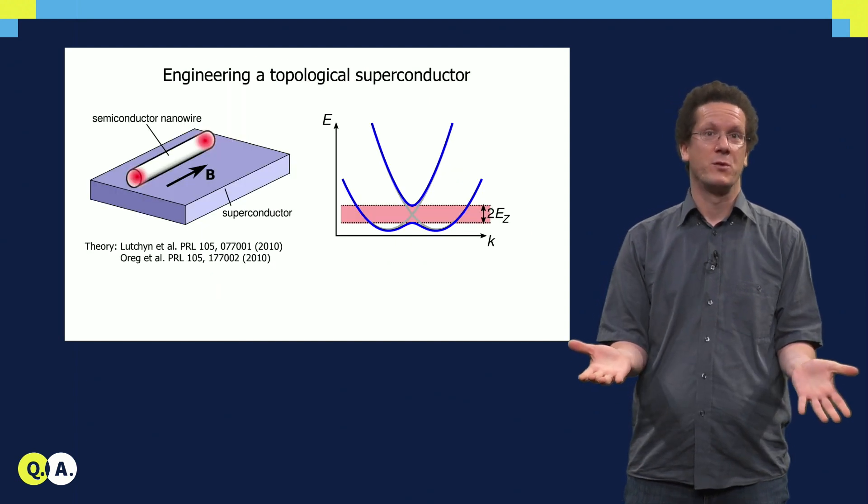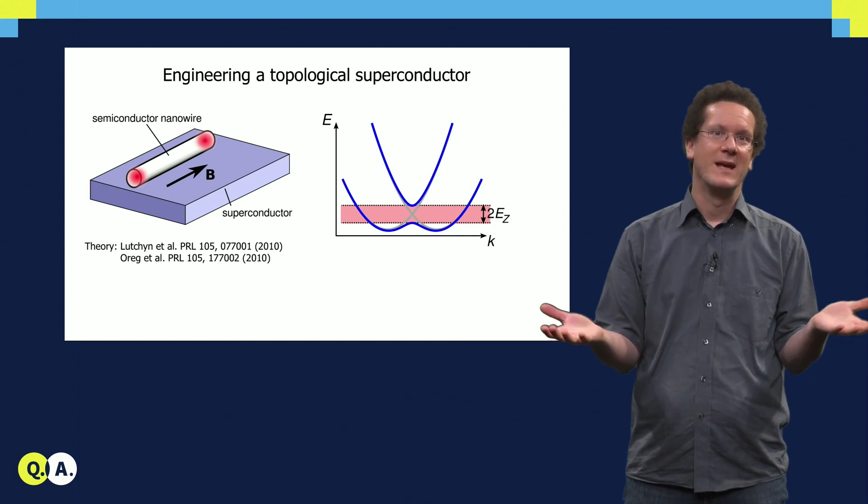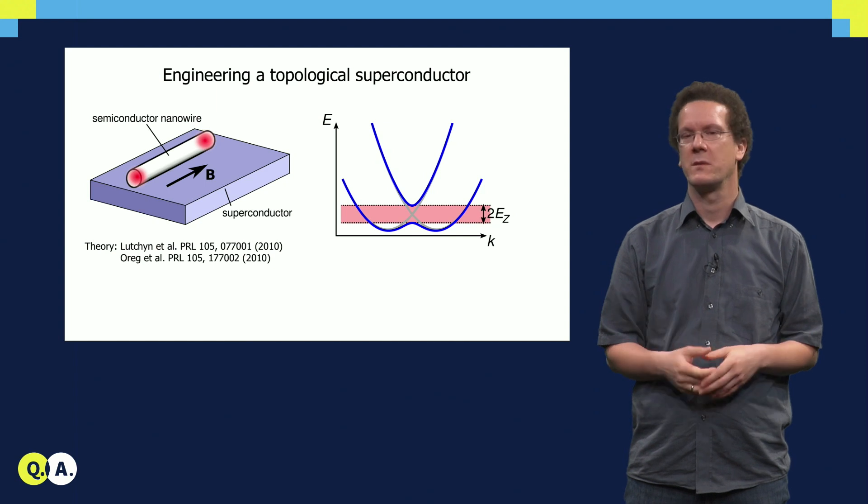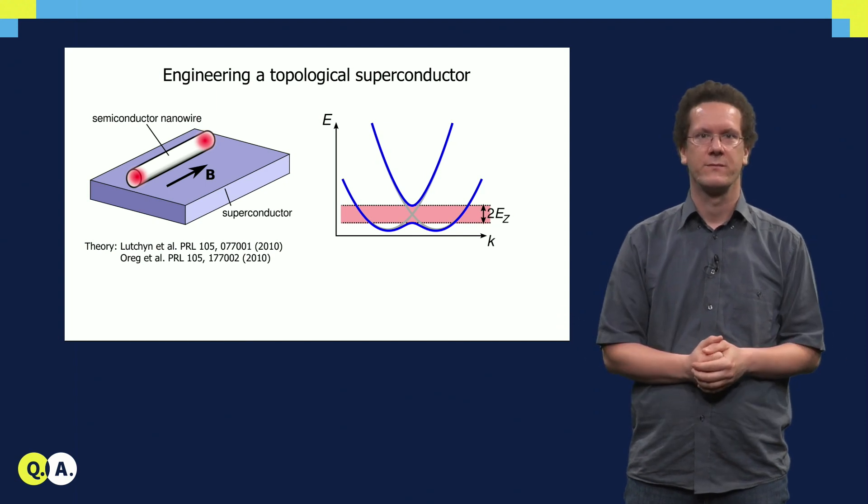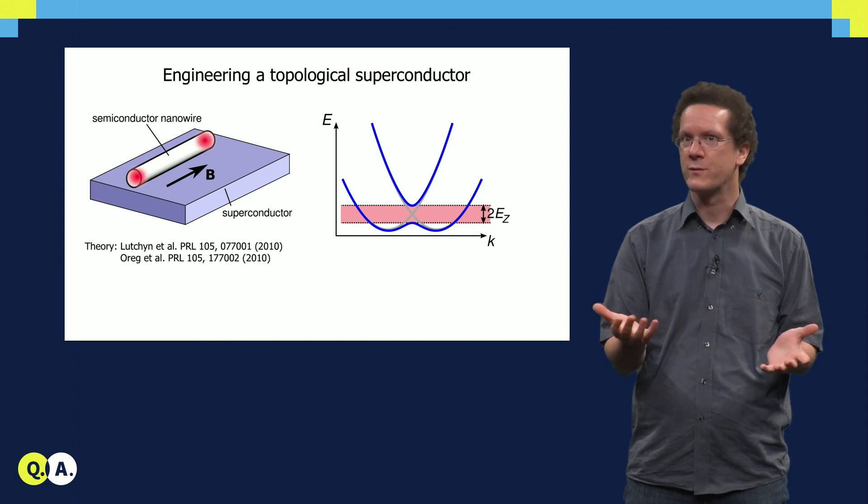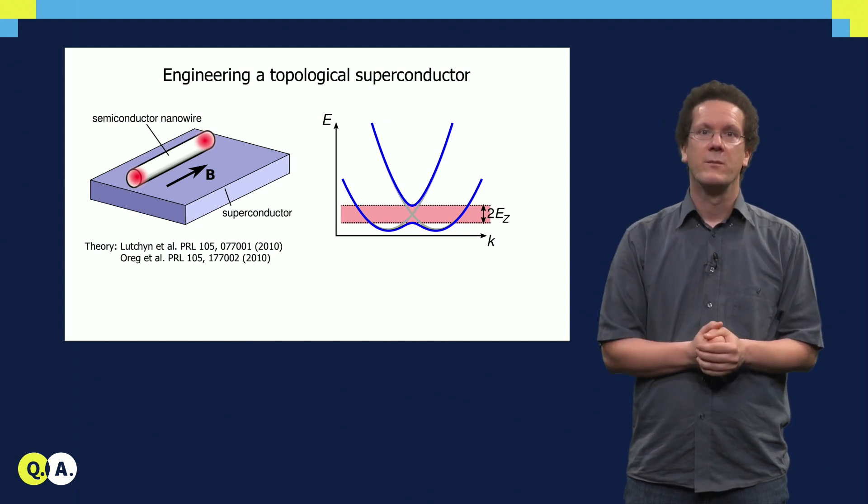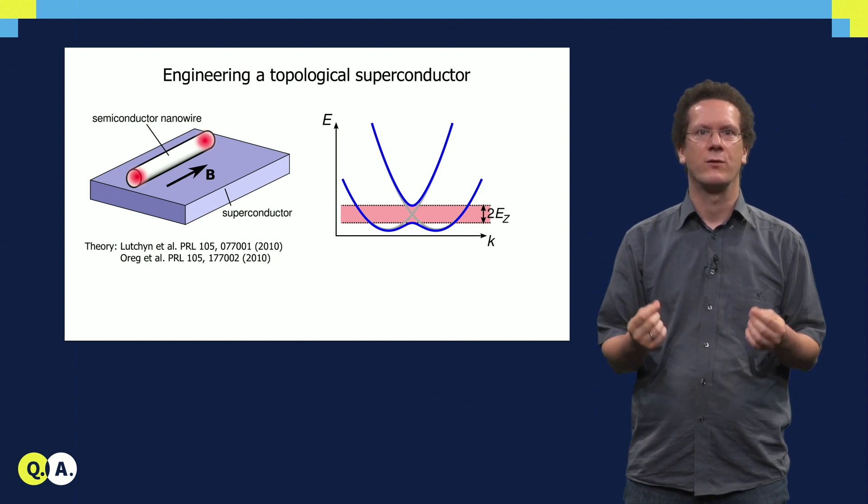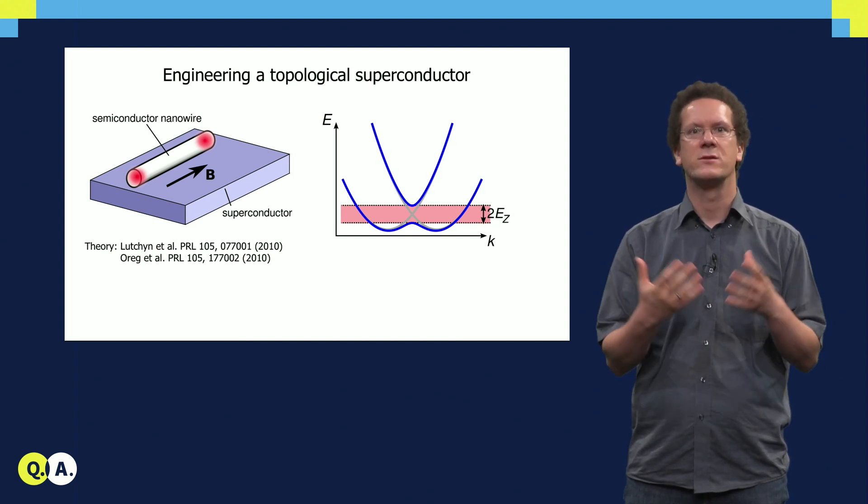So, a p-wave superconductor would be nice to have. But it turns out that all the superconductors in nature that we know of are just trivial superconductors. There are some candidates that might be p-wave superconductors, but nobody knows for sure.